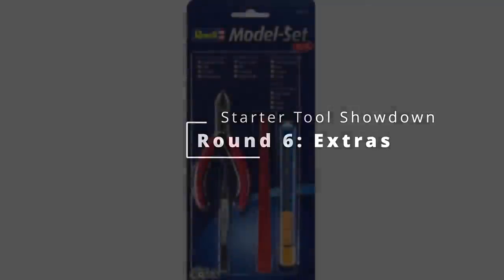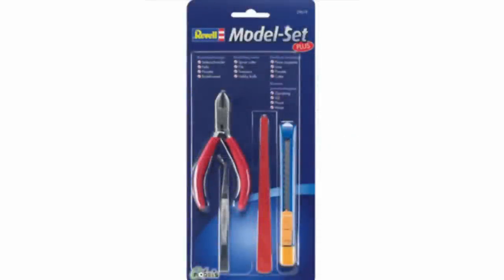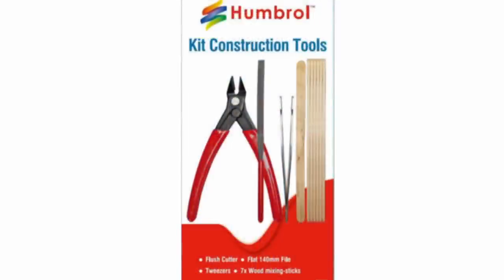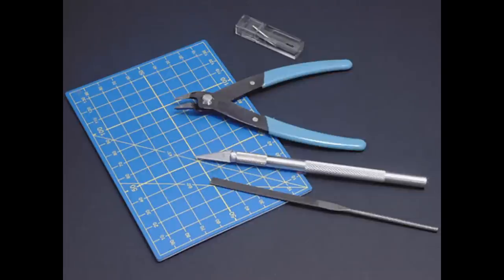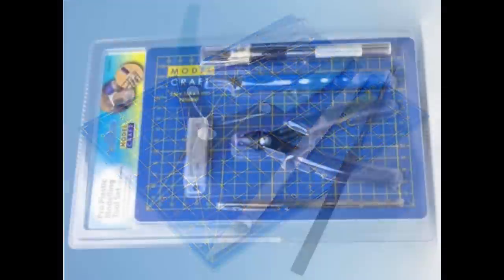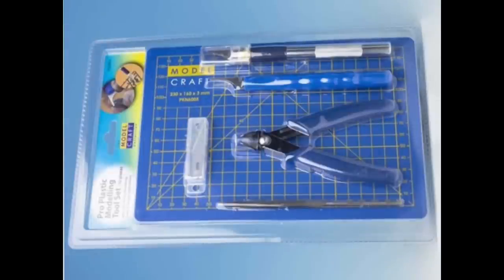Let's move on to round 6, Extras. For this round it's easiest to start bottom up with Revell, since they offer you nothing other than the basics. Humbrol gives you 7 wooden stir sticks, which seems almost as bad as nothing. We follow that with the practically identical Italeri and Modelcraft sets, which give you an A6 cutting mat, which has extremely limited utility. The Modelcraft Pro set gives you a slightly larger and almost as useless A5 mat, as well as a seam scraper. This latter might have a bit of use for a beginner, though I personally have never found a really good use for them.